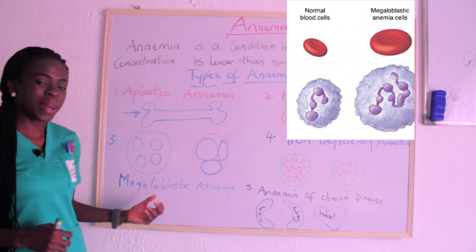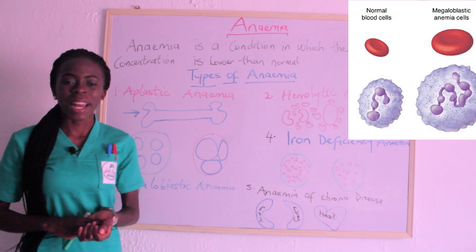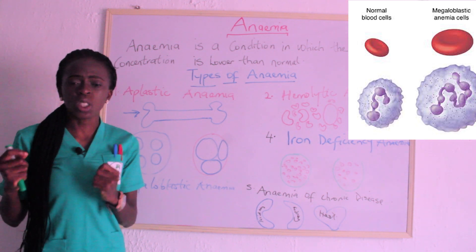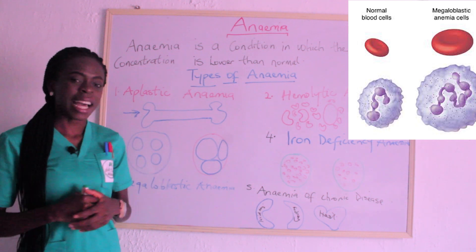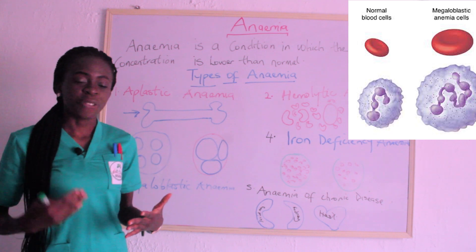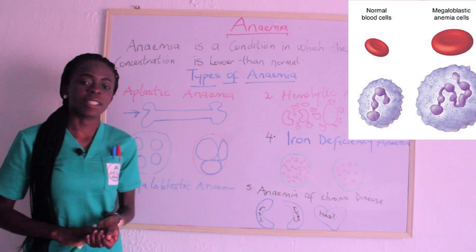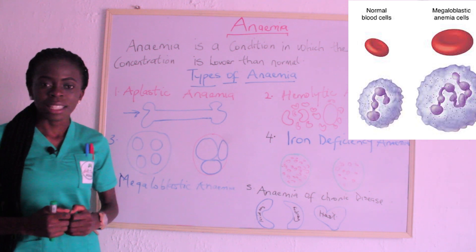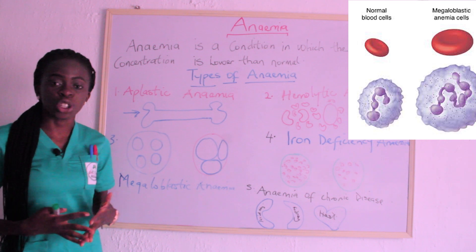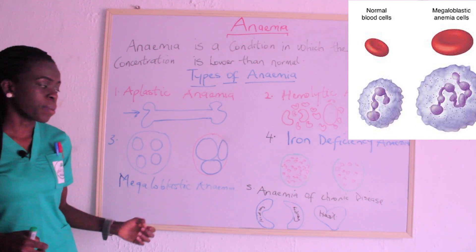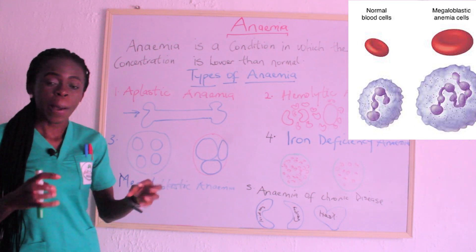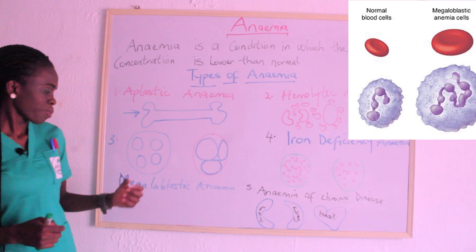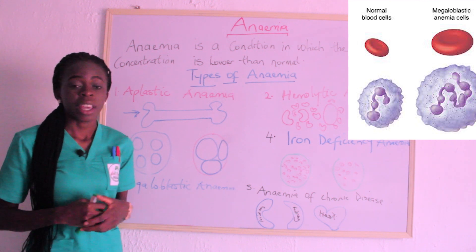The third is megaloblastic anemia. Megaloblastic anemia occurs as a result of deficiency in vitamin B12 and folic acid. Remember, vitamin B12 and folic acid are very important when it comes to the maturation of red blood cells. In megaloblastic anemia, the cells are bigger than normal — that is why it is called mega. The cells are bigger than normal, and it is as a result of deficiency of vitamin B12 and folic acid.